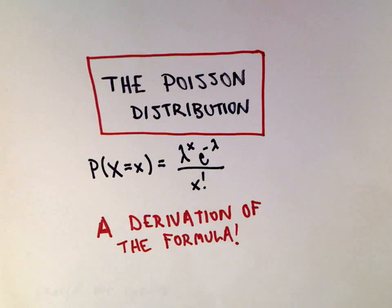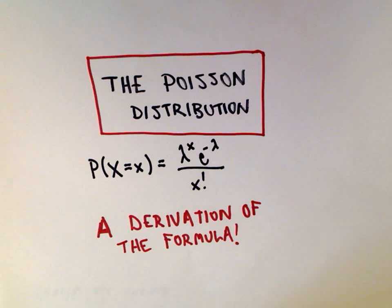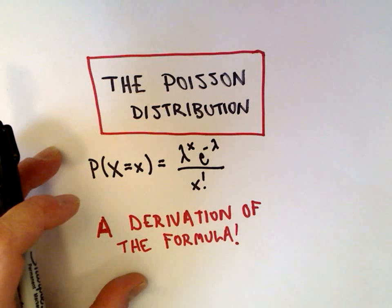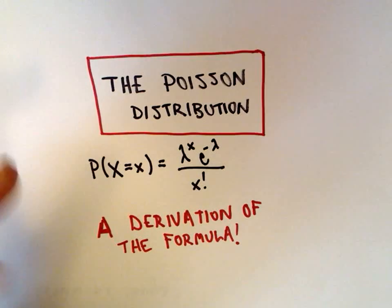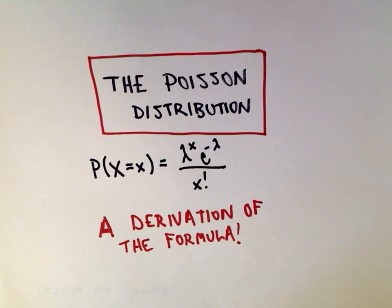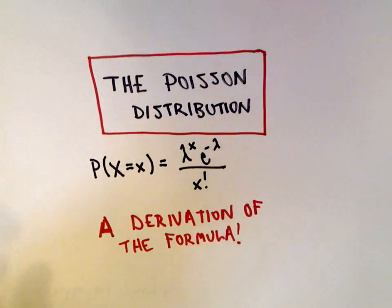The idea with a Poisson distribution — what are we even doing here? Some experiments result in counting the number of times a particular event occurs at a given time or on some physical object. Maybe you want to count the number of phone calls arriving at a switchboard between 11 a.m. and noon, the number of flaws in 100 feet of wire, or the number of customers arriving at the drive-thru between 2 p.m. and 4 p.m.